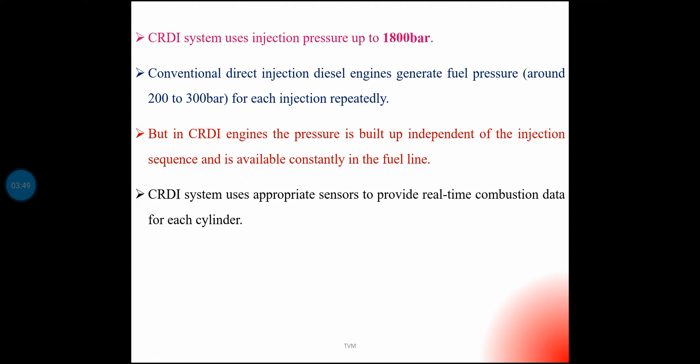To put it in perspective: atmospheric pressure is 1 bar, while CRDI uses 1800 bar — a very high pressure for fuel injection.